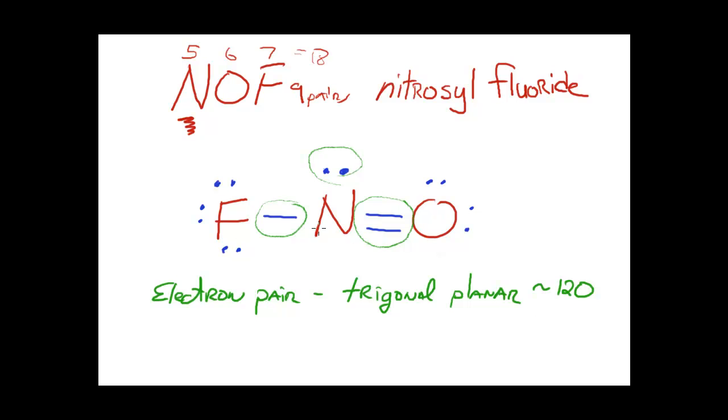But in this case, because one of the regions of density is a lone pair, we know that the molecular and electron pair geometry will not be the same. The molecular geometry will be different because the molecular geometry only focuses on the location of the atoms in space. We're only going to worry about where the N, F, and O are with respect to each other.